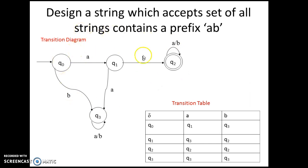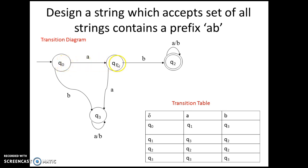This transition diagram can be converted into a transition table. The transition table has rows representing states and columns representing input symbols. Q0 upon A gives Q1; Q0 upon B gives Q3. Similarly you can fill all the remaining transition table entries for Q1, Q2, and Q3 upon inputs A and B.